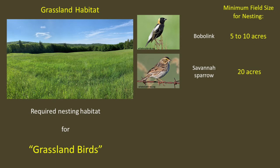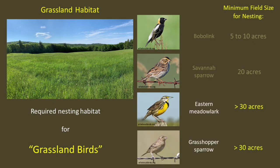Bobolinks require fields at least five to ten acres in size for nesting, and savannah sparrows rarely nest in fields less than 20 acres. Populations of these two species are declining rapidly, but they still occur pretty predictably in most grassland habitats of these sizes in New Hampshire. Two additional grassland bird species you might encounter are the eastern meadowlark and the grasshopper sparrow. These birds rarely occur in grasslands less than 30 acres, and they are becoming quite rare. Both are listed as threatened species in New Hampshire.